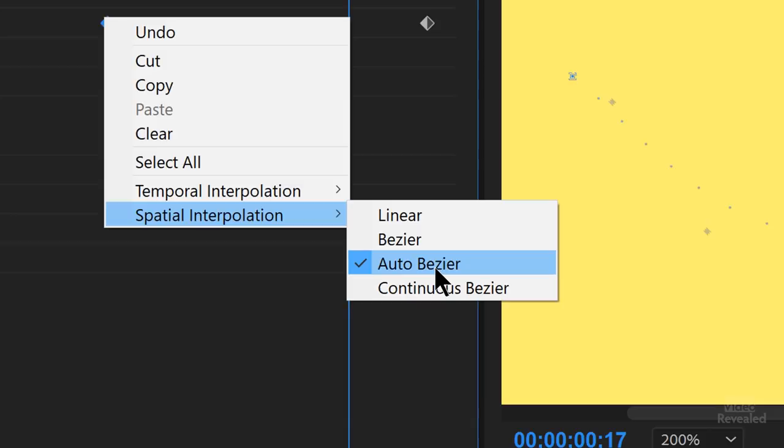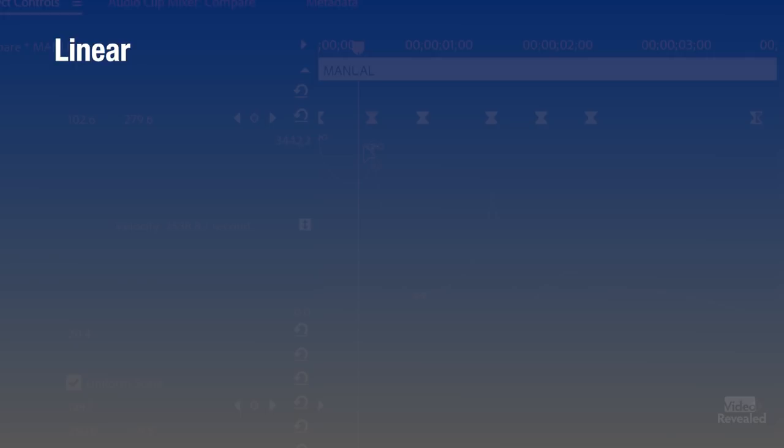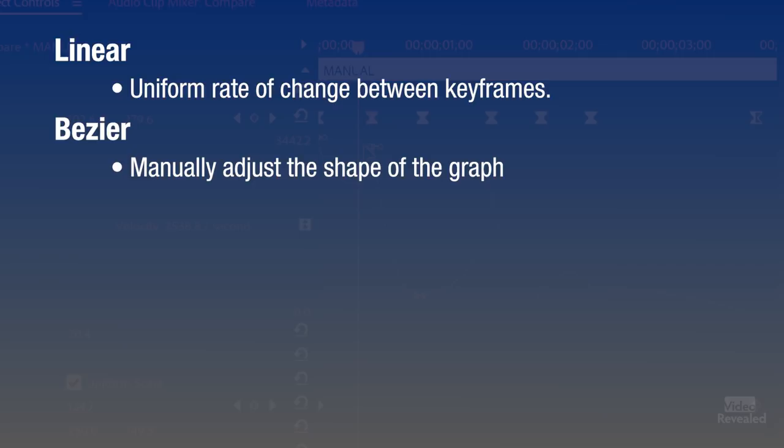You'll see four choices: linear Bezier, Auto Bezier, and continuous Bezier. If we go over those, the linear one creates a uniform rate of change between keyframes. Bezier lets you manually adjust the shape of a graph and the rate of change on either side of the keyframe. You can create very smooth changes using this method.